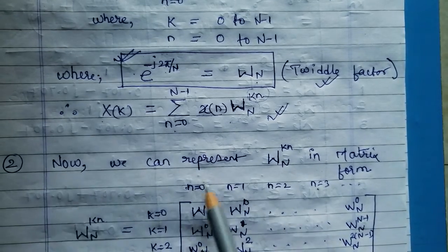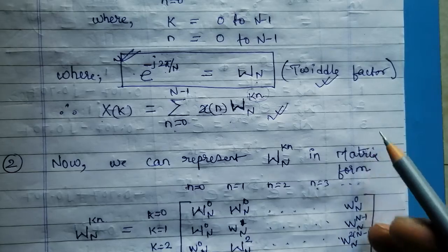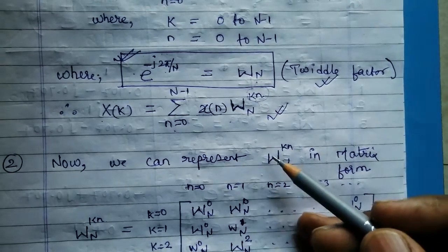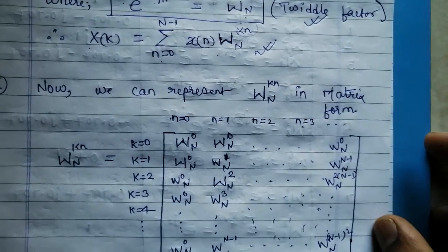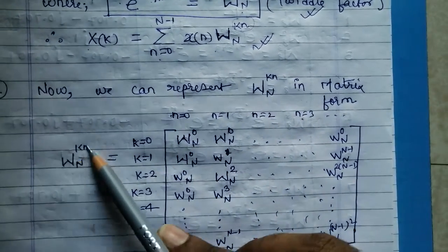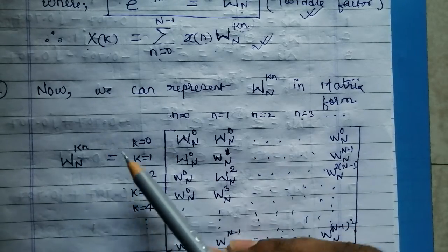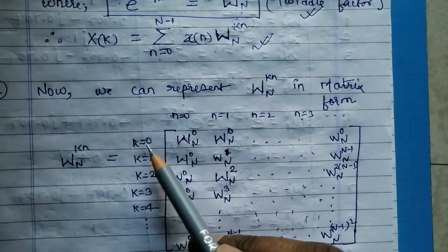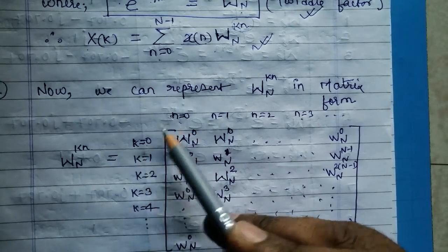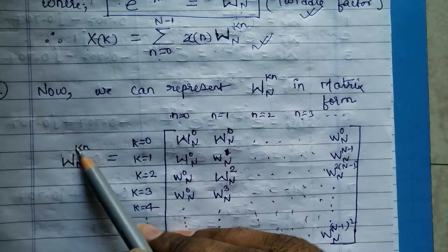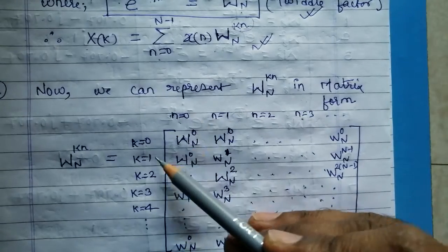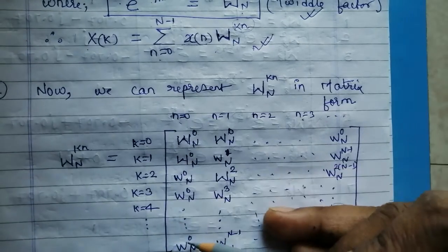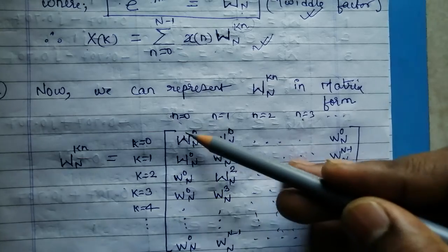We can also represent this twiddle factor in matrix form. There are two terms, k and n, and for their values we can write the matrix as follows. For k equals 0 and n equals 0, k times n becomes 0. So the first column values are: 0 times 0, 1 times 0, 2 times 0, 3 times 0, all the way to (N minus 1) times 0 — all of which equal 0.